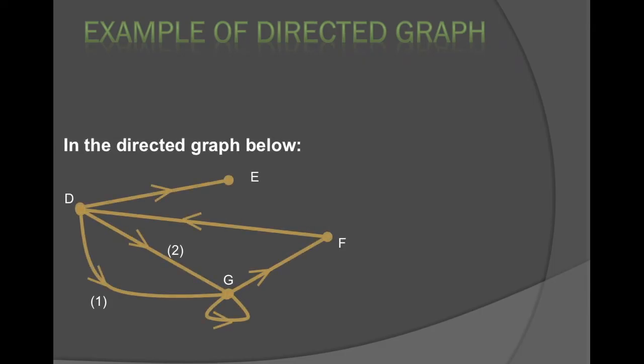Here's an example of a directed graph. Notice how it's the same thing as a graph that you've seen in the previous presentations, except now your graphs have arrows. There's a reason for these arrows. If you are going to make a path, you have to follow the arrows.